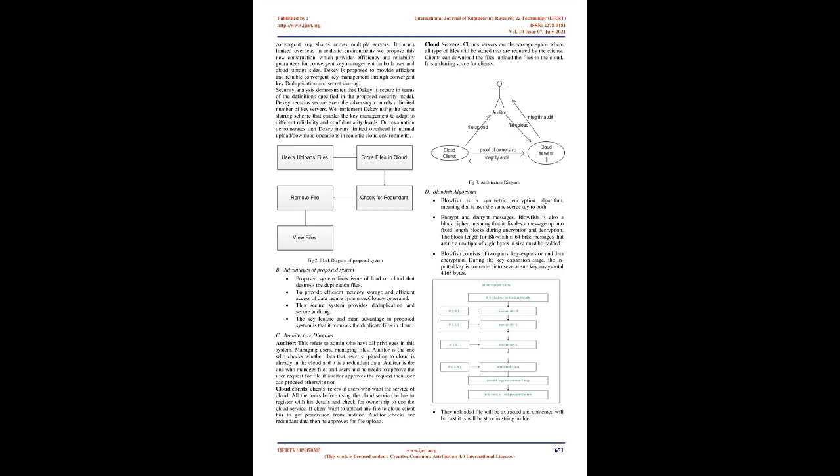Letting M be a file's data, a client first computes a key K = H(M) by applying a cryptographic hash function H to M, and then computes ciphertext C = Enc(K, M) via a deterministic symmetric encryption scheme. A second client B encrypting the same file M will produce the same C, enabling deduplication. However, CE is subject to an inherent security limitation, namely susceptibility to offline brute force dictionary attacks.